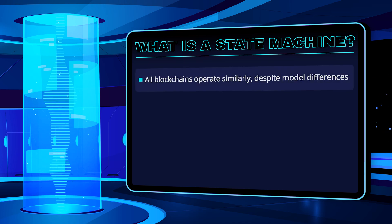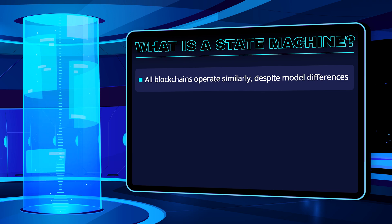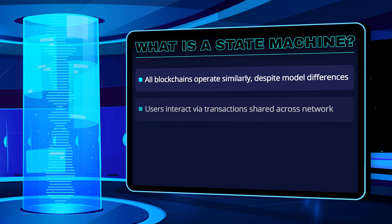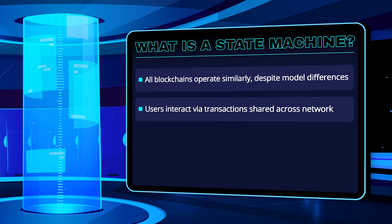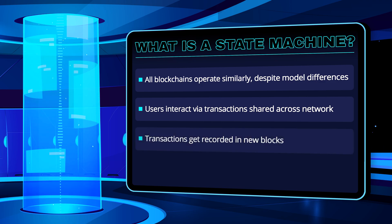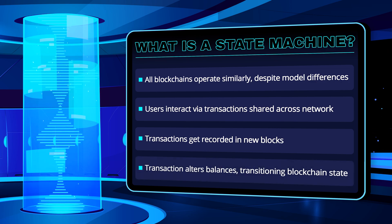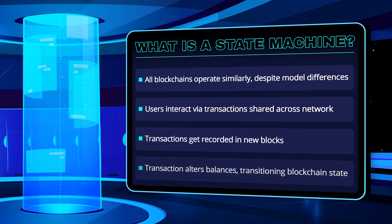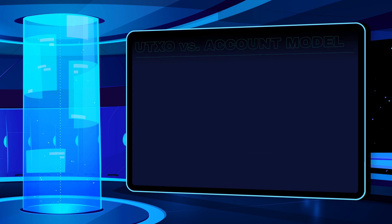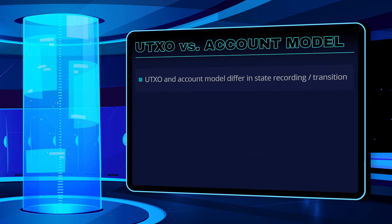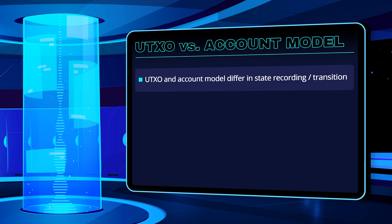All blockchains, whether they use the UTXO or account model, operate in a similar way. Users interact with the blockchain through transactions, which are shared with the network and recorded in a new block. The balances of the people involved in the transaction are then updated as the blockchain transitions to a new state. The main difference between the UTXO and the account model lies in the way of recording the state and transitioning from one state to another.